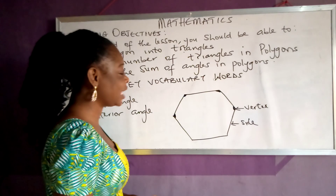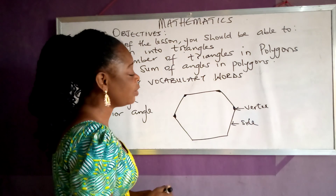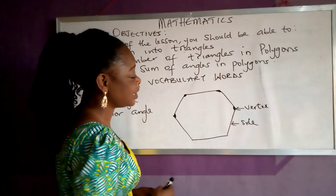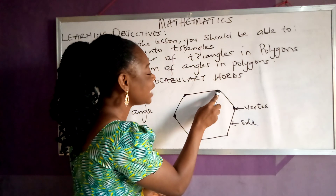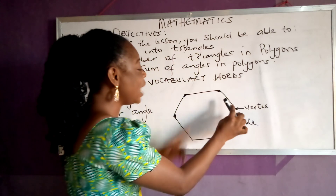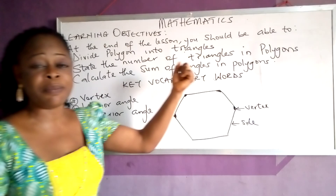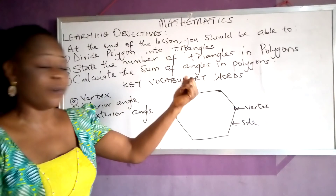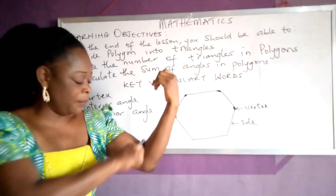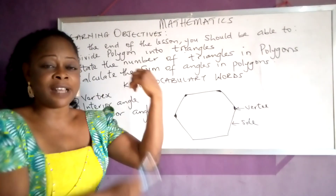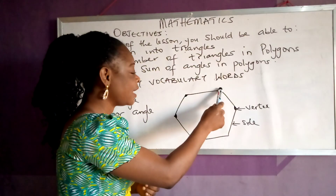So let's start to look at the vertex. What do you understand by the vertex? The vertex is the angle — this edge — where two straight lines meet. That is what we call a vertex. Your hand can be a good example: this is one straight line, this is another straight line, and where they meet, that place is the vertex.